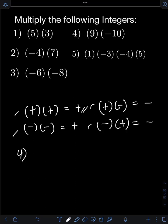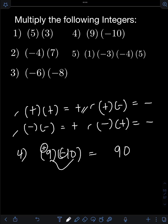For number 4, we have 9 times negative 10. Let's multiply the absolute value of the numbers first: 9 times 10, that will be 90. We are multiplying unlike signs — one positive and one negative — so therefore the final answer should be negative 90.